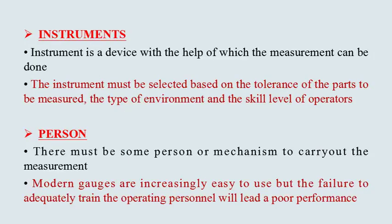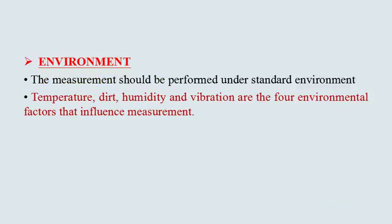Next is the instrument — a device with the help of which measurement can be done. The instrument must be selected based on the tolerance of the parts to be measured, the type of environment, and the skill level of the operator. Next is the person — there must be some person or mechanism to carry out the measurement. Modern gauges are increasingly easy to use, but failure to adequately train the operator will lead to poor performance. The measurement should also be performed under a standard environment.